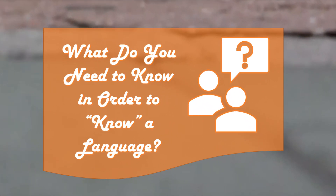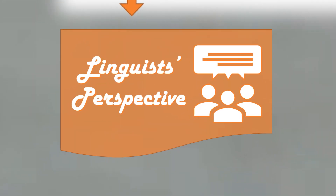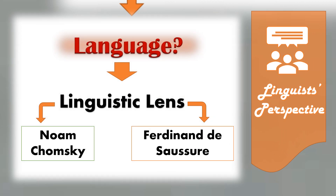What do you need to know in order to know a language? Understanding language varies depending on the perspective you are looking into. One view is based on the linguistic perspective while the other is through the lens of linguistic anthropologists. Linguist perspectives are best captured in the ideas of two prominent linguists: Noam Chomsky and Ferdinand de Saussure.